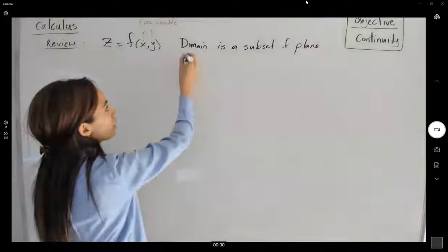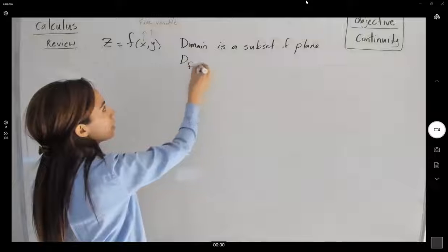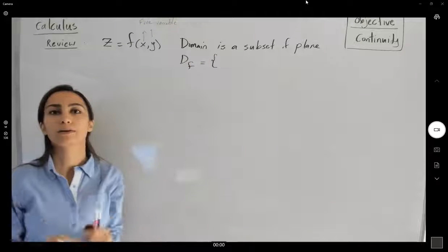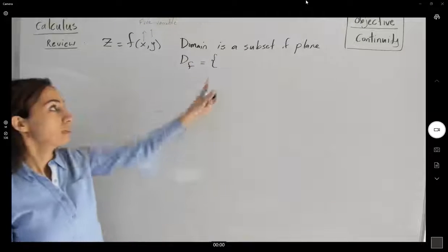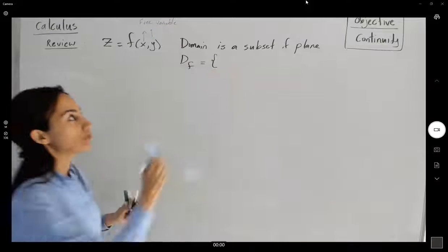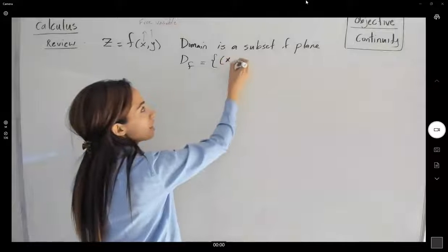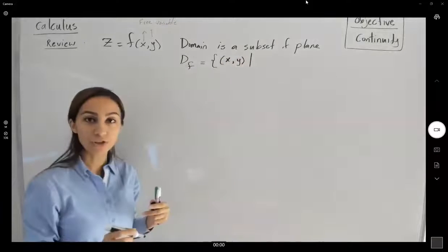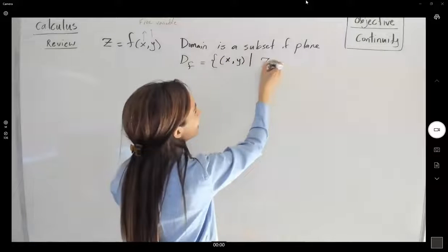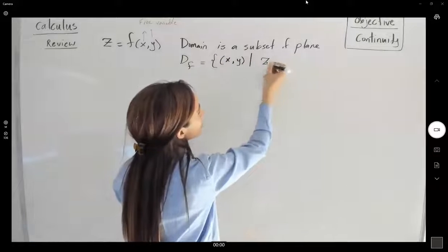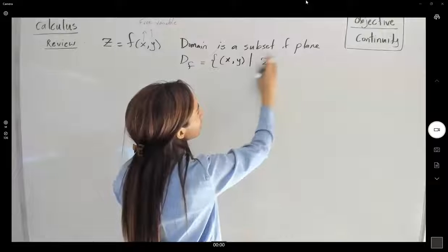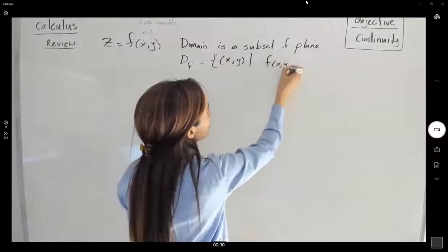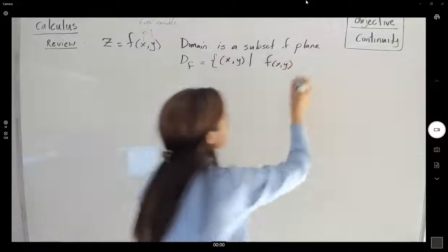To define the domain of the function, we use set-builder notation: the set of all points (x, y) such that z equals f of x and y, or f of x and y is defined.